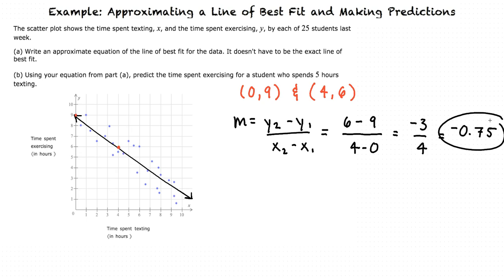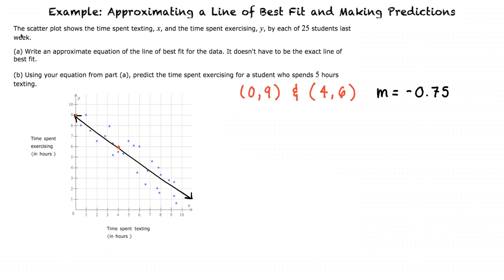Now, we can use this slope and one of our points and plug them into the point slope formula to find b and complete the equation of the line. The point slope formula is written as y equals mx plus b.